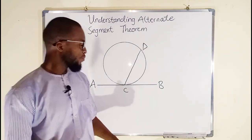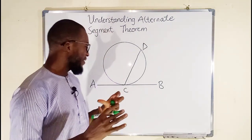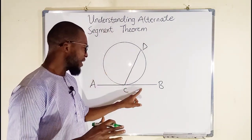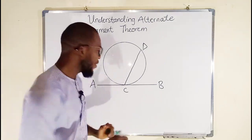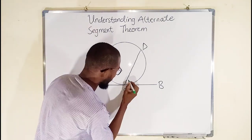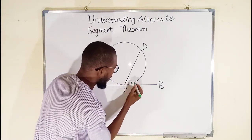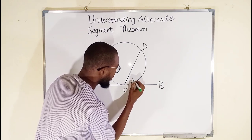What you should observe here is that this chord and the tangent form an angle here, and I can call it beta.